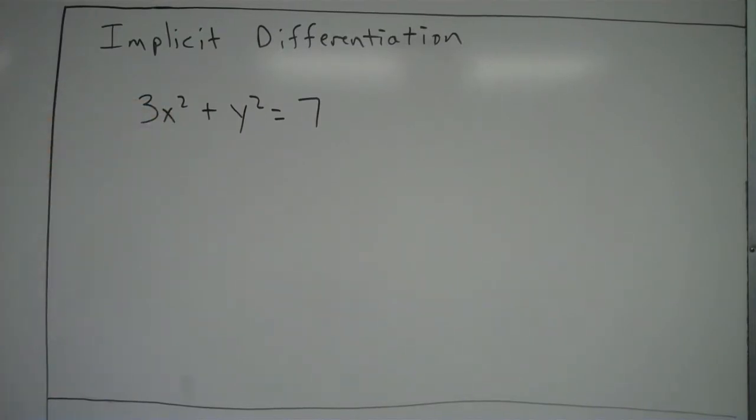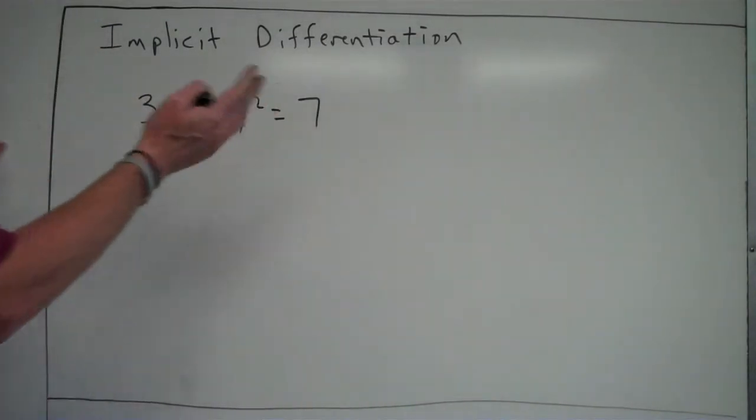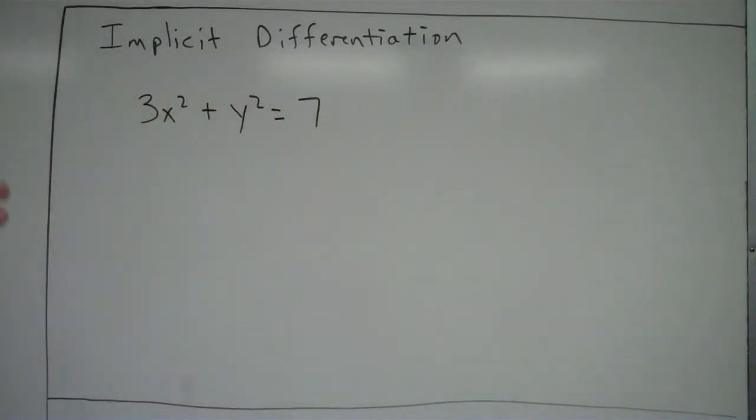When something's defined implicitly, it's not that way, the x's and y's can be on the same side and so forth. There's still a relationship between x and y, but they're just defined implicitly, meaning this is not solved for y in terms of x. Now, this one I guess we could solve, but many of them you cannot. So there's a little different approach you have when you have something like this, when you have a function that's defined implicitly.